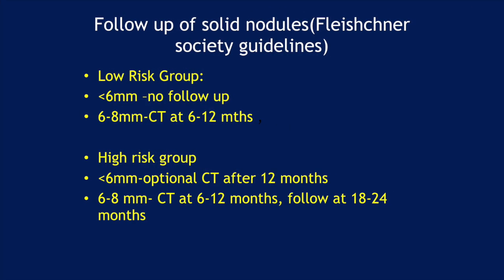Now we know the at-risk group, and we follow up solid nodules accordingly using the Fleischner Society guidelines. For the low-risk group: if less than 6 mm, no follow-up is required; for 6 to 8 mm, CT at 6 to 12 months is needed. For the high-risk group: less than 6 mm, you can do a CT after 12 months.